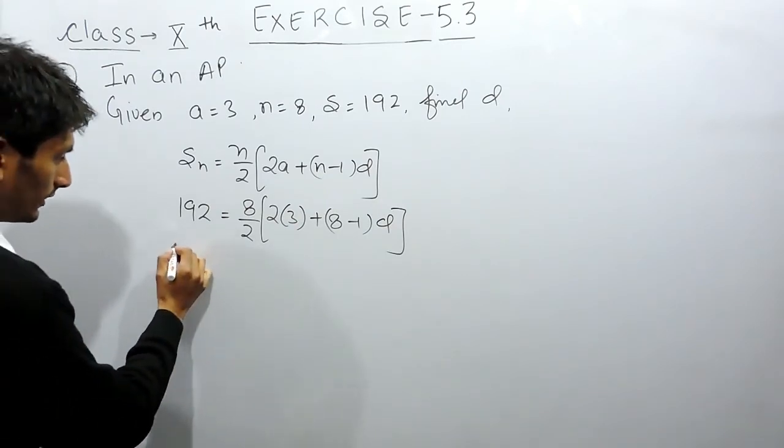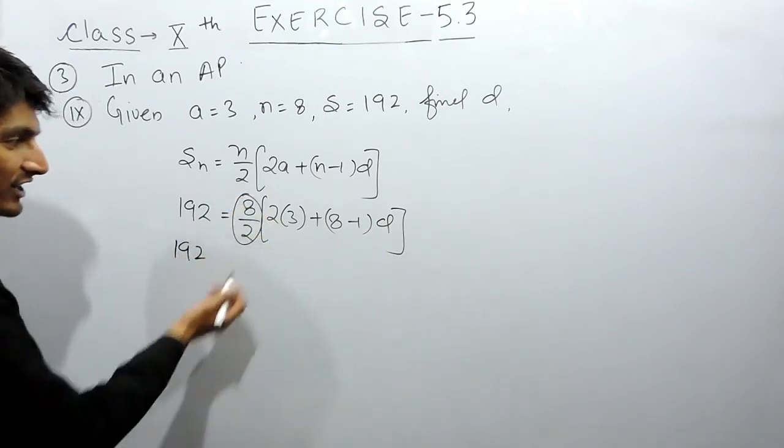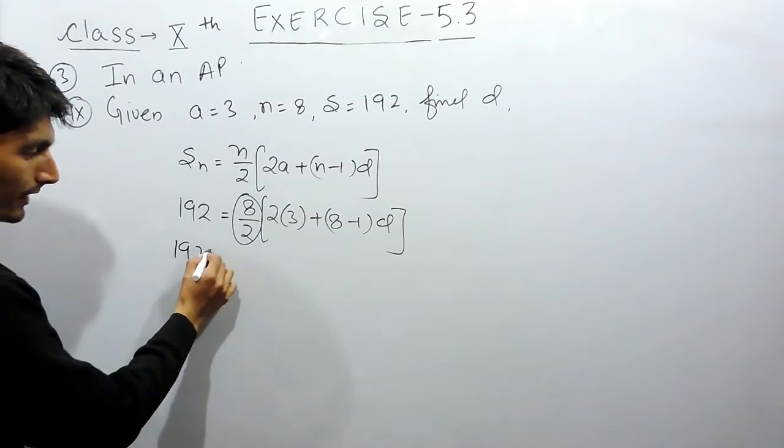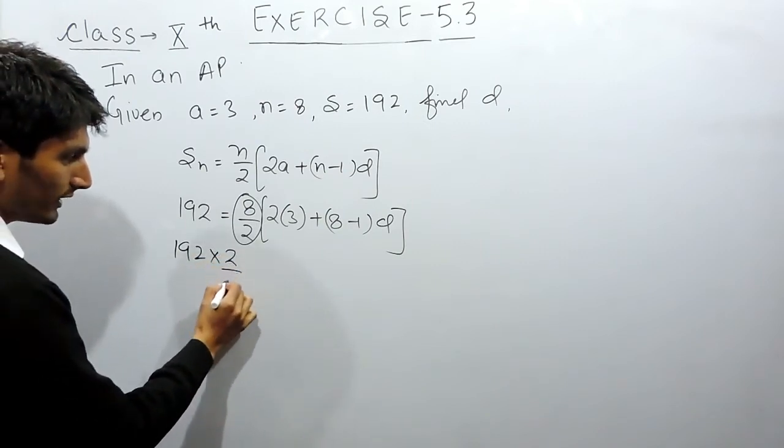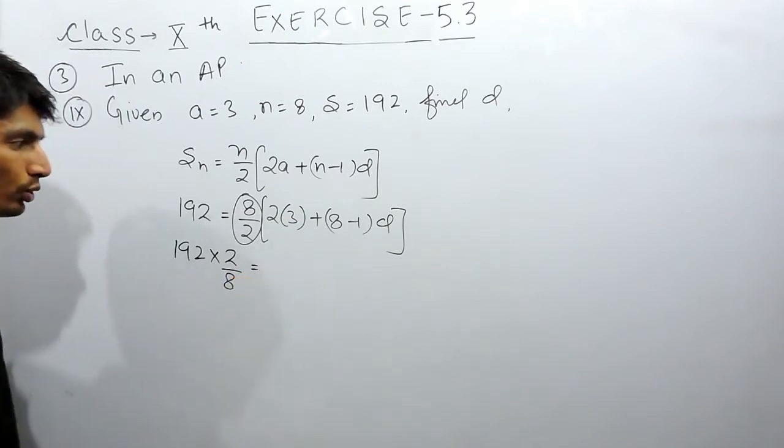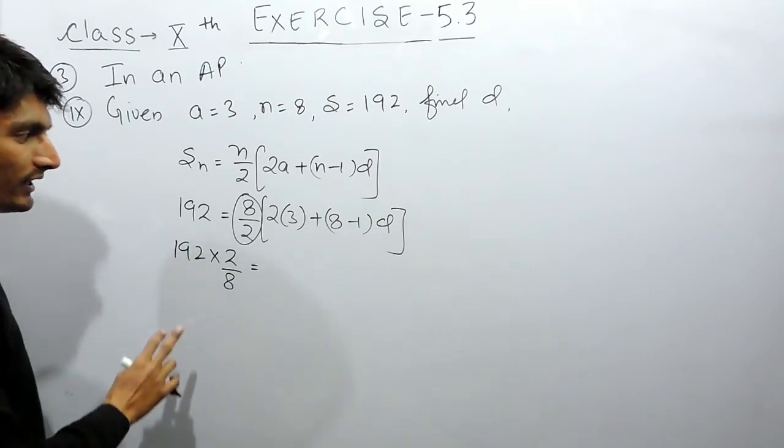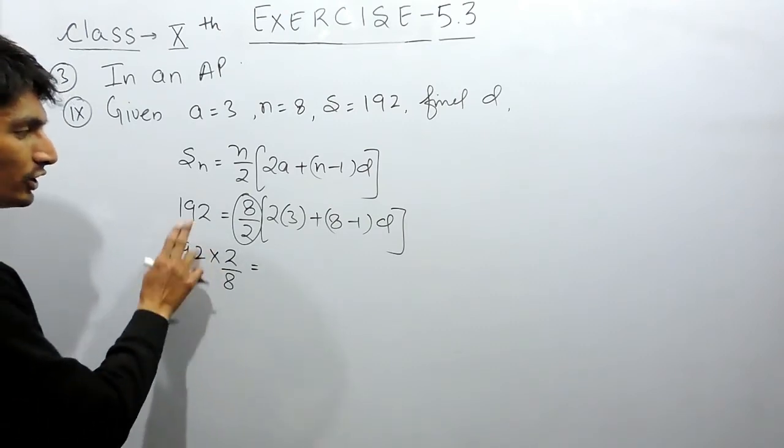Now, this is 192. This fraction when shifted to this side, it should become 2 upon 8. We know that whenever a fraction is shifted to the other side of equals to sign, it gets reciprocal. Means the numerator becomes denominator and the denominator becomes numerator.